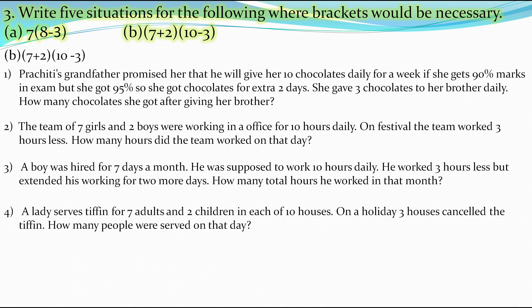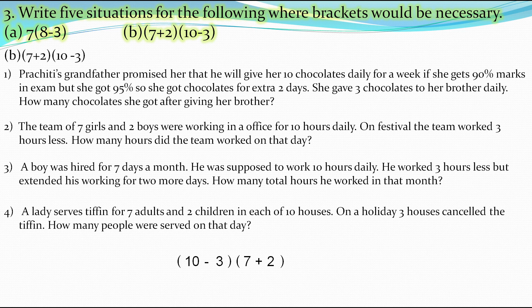The fourth situation: a lady serves a meal to 7 adults and 2 children in each of 10 houses. To find the total number of persons, we add 7 plus 2. On a holiday, 3 houses cancelled, so we subtract 3 from 10. How many people were served on that day? We put both expressions in brackets, find the answers, and multiply them together.